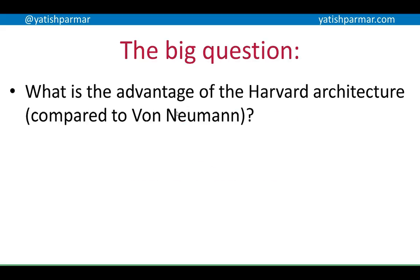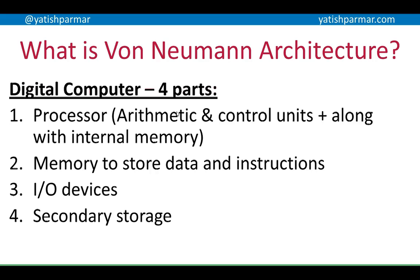You need to be able to understand what the advantage of the Harvard architecture is compared to von Neumann. So, a quick recap on von Neumann: you've got a digital computer in four parts — the processor with the various components within it, the main memory which stores the data and instructions, and then the IO device and secondary storage.